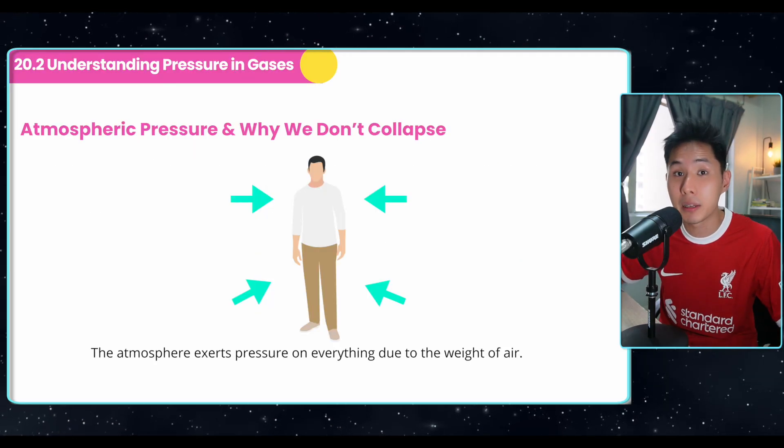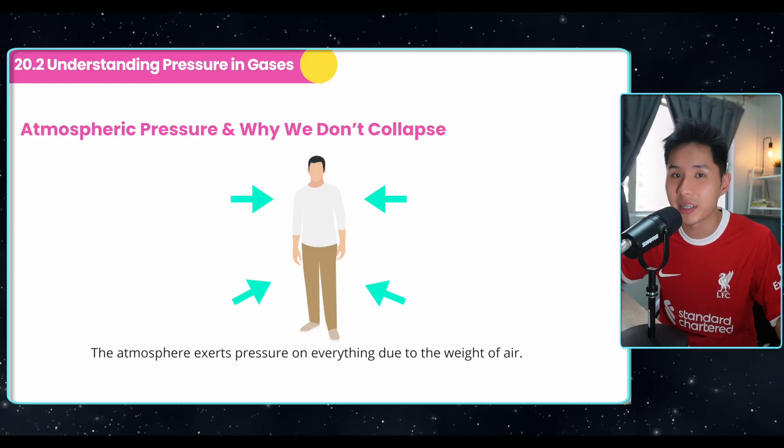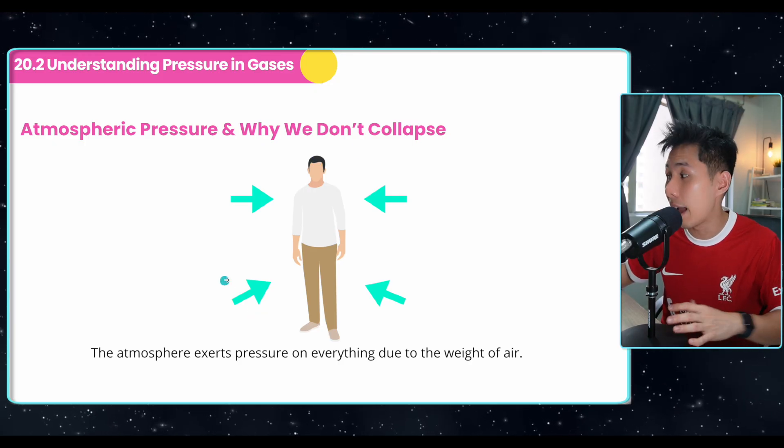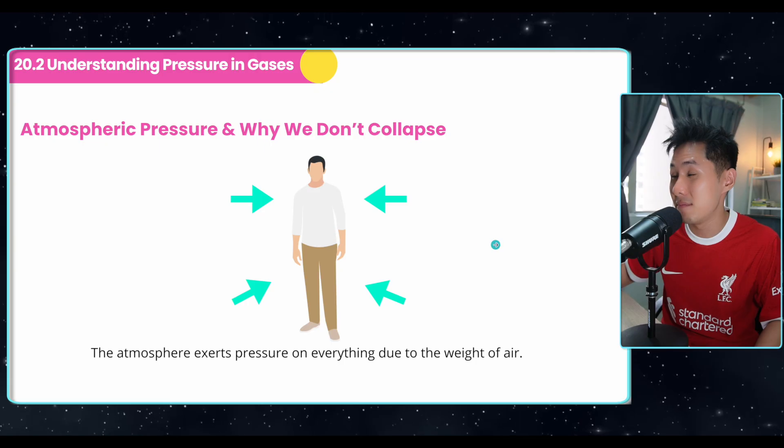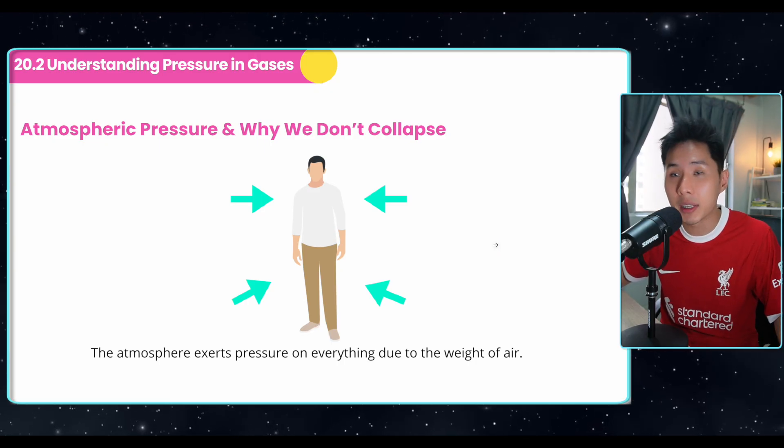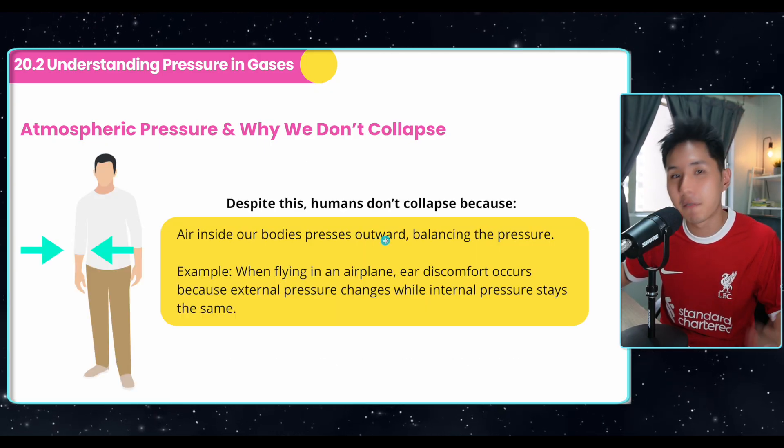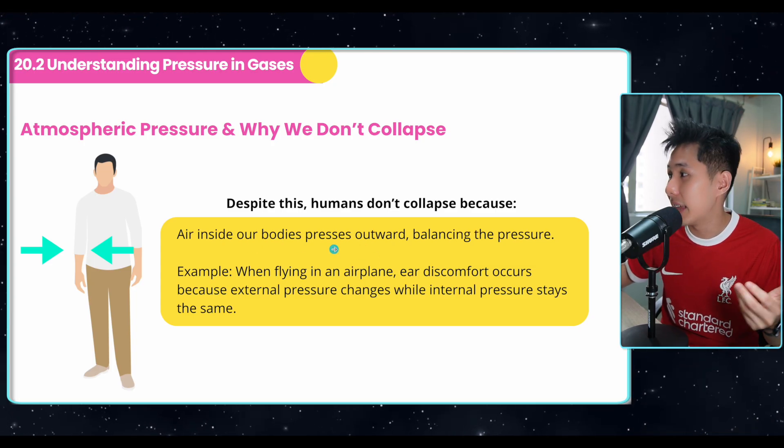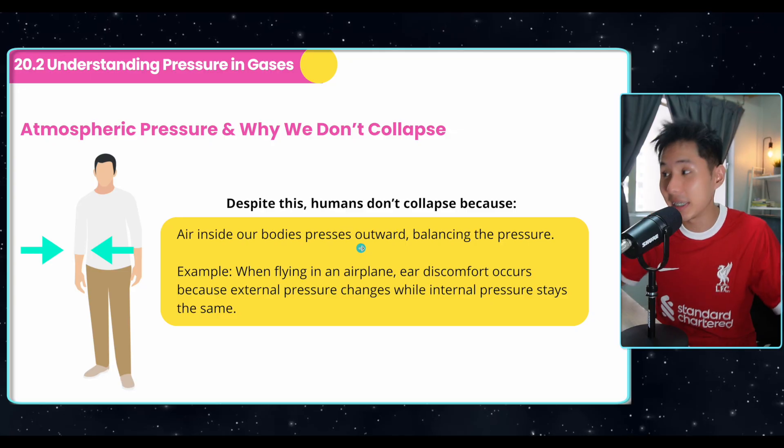And as for all of us, we are actually being bombarded by these air particles all the time. And it's called atmospheric pressure. And the atmosphere exerts pressure on everything due to the weight of the air. And you might ask, why don't we as humans collapse? And that is because fortunately, we also have air inside our body that presses outward, balancing the pressure.